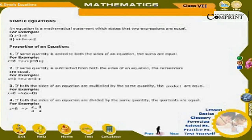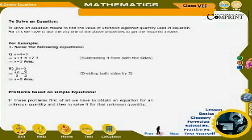4. If both sides of an equation are divided by the same quantity, the equations are equal. For example, x = 8 implies x ÷ a = 8 ÷ a. To solve an equation means to find the values of unknown algebraic quantities used in the equation. For this, we use any one of the above properties to get the required answer.